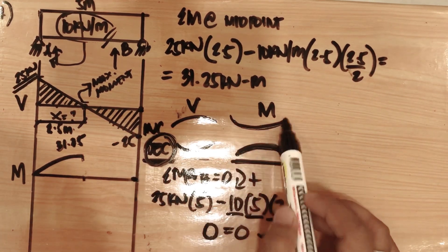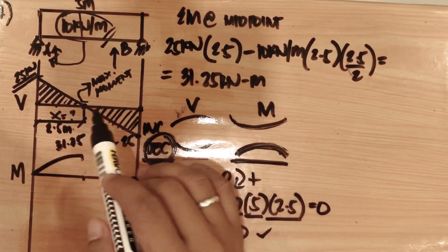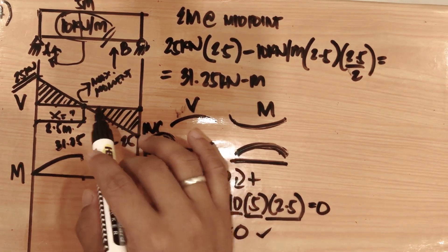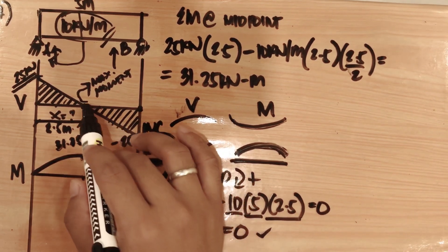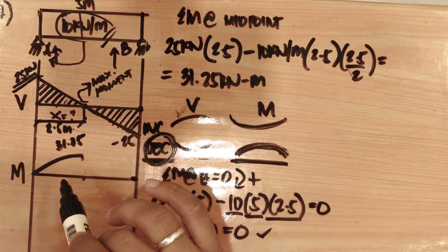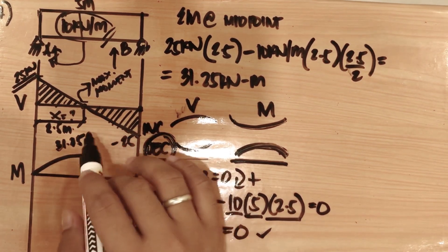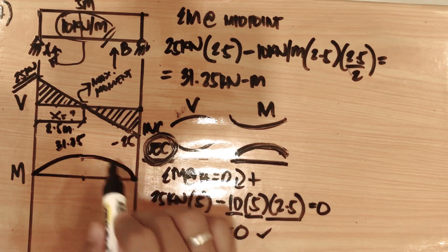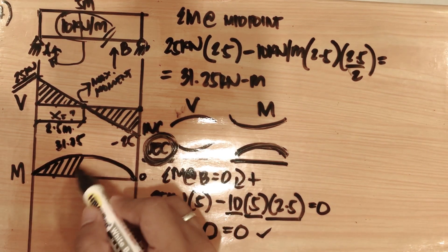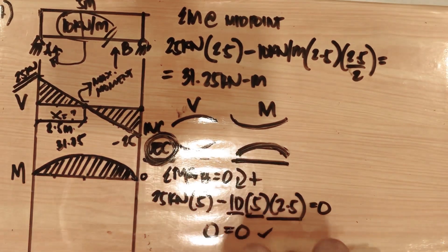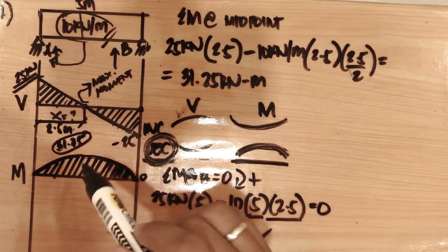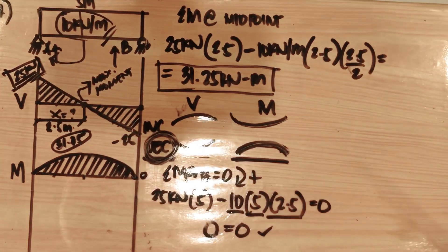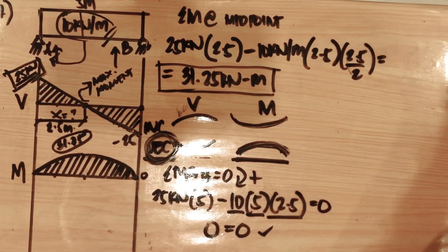Checking the graph shape: from midpoint to point B, the shear is decreasing and the moment returns to zero at support B, giving a concave downward curve. The shear and moment diagram for problem number one is complete. The maximum moment is 31.25 kilonewton-meters and the maximum shear is 25 kilonewtons.